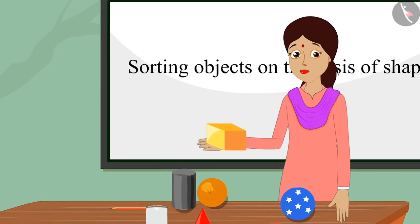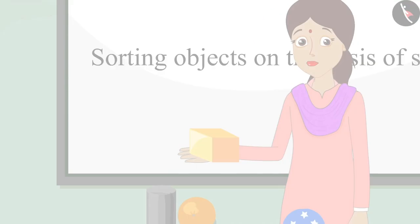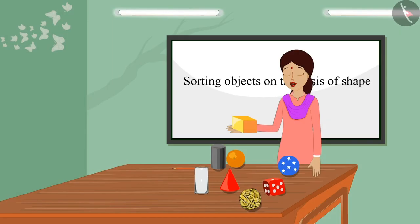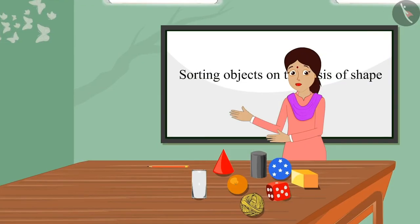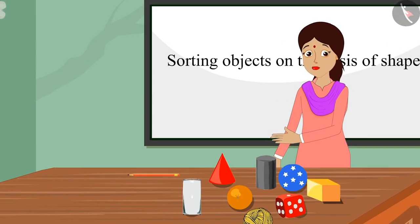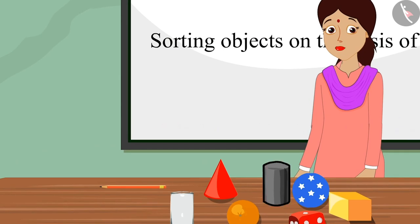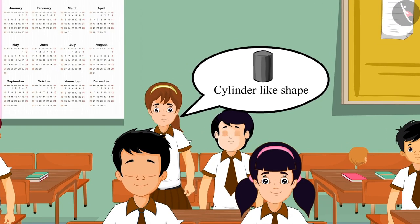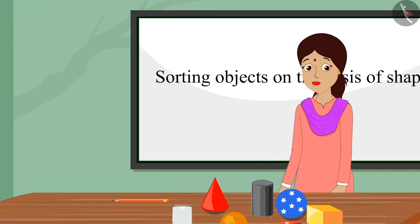The teacher shows another object. Children respond: this has a box-like shape. Well done, Chotu — well said, this has a box-like shape. The teacher then shows another object and asks children to recognize its shape. A child answers: it looks like a cylinder.